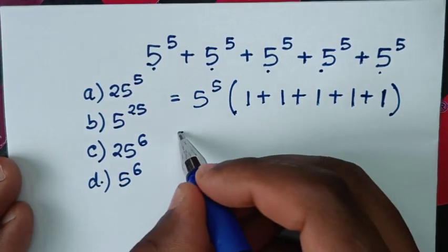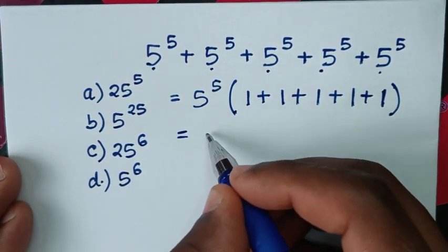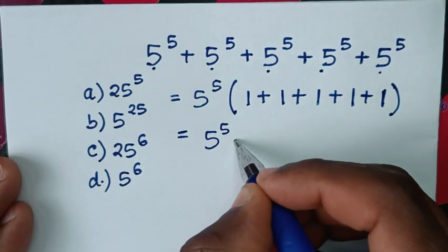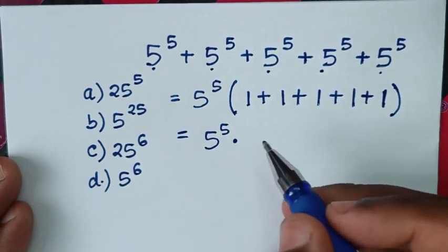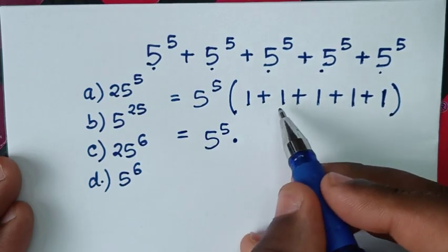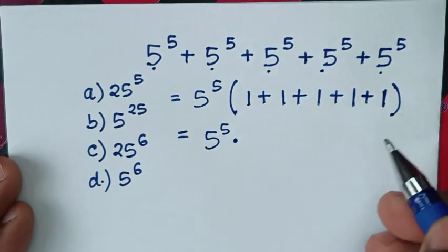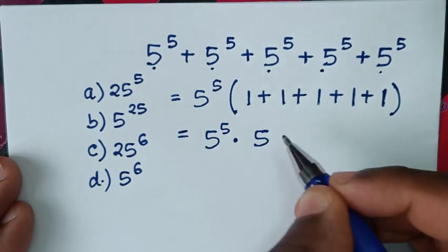Then it will be equal to 5 power 5 times, from here 1 plus 1 plus 1 plus 1 is 5.